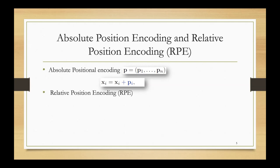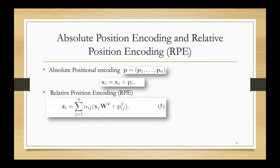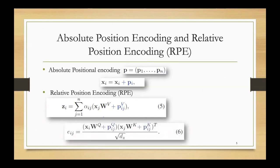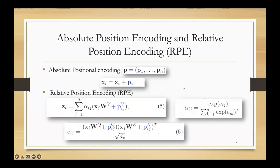In relative positional encoding, we calculate the relative distance between two tokens and formulate the self-attention accordingly. The encoding vector e_ij incorporates p_ij, which represents the relative position encoding vectors between elements x_i and x_j.